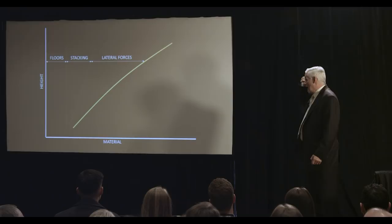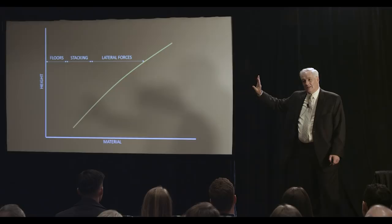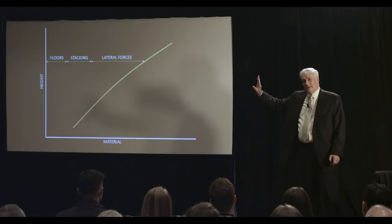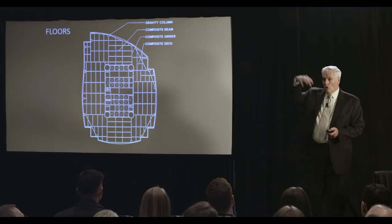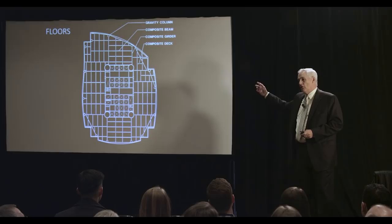So why is that? There's three components that make up the material that go into a building. Stacking and lateral forces and floors. Now, the easiest one of that, the floors, is simply—here's a floor from 2 Union Square in downtown Seattle. The amount of steel required in that floor depends on the load on the floor and the span and nothing else. The 56th floor of 2 Union Square is exactly the same weight as the second floor in terms of the floor itself.